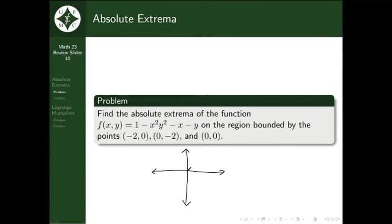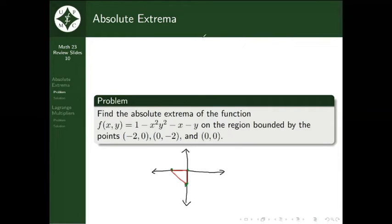We have three points: (0, 0), (-2, 0), and (0, -2). The most obvious way to connect them would be through a triangle, and this region also includes the inner part, which we shade in blue. That's what our region looks like.